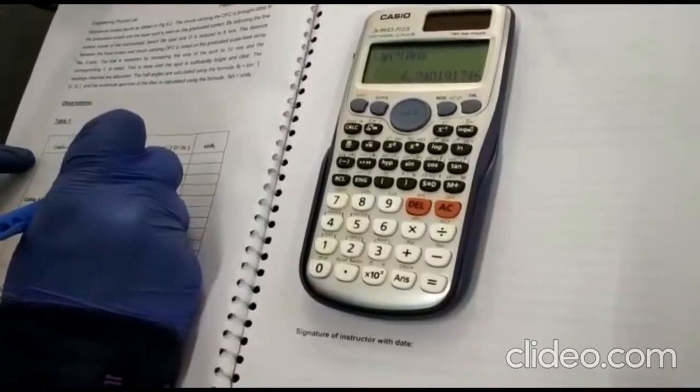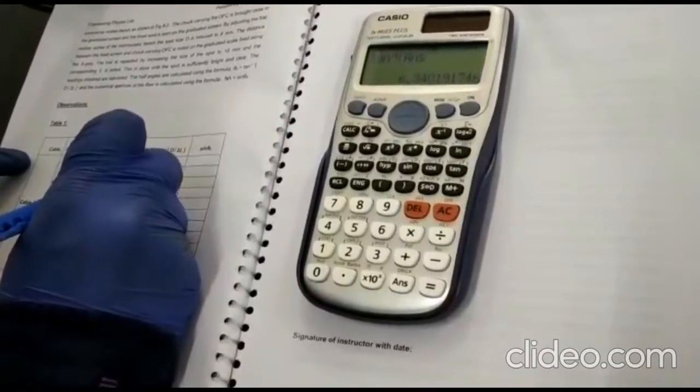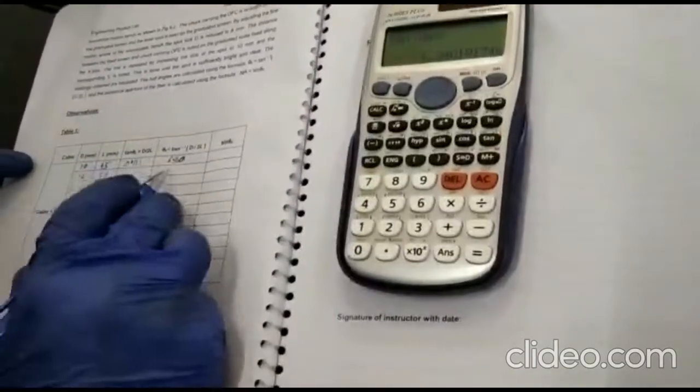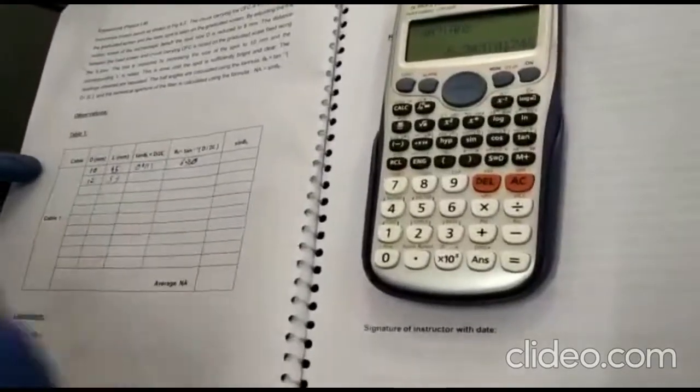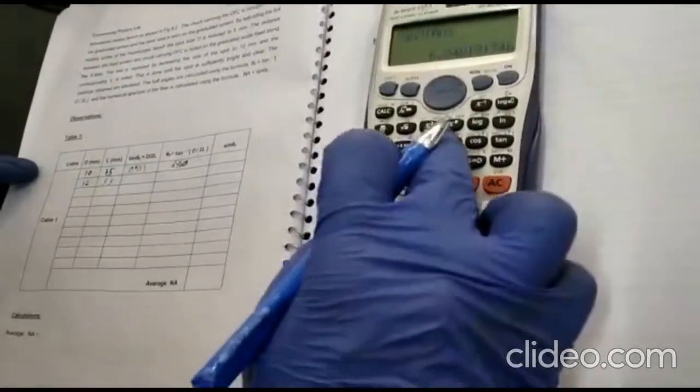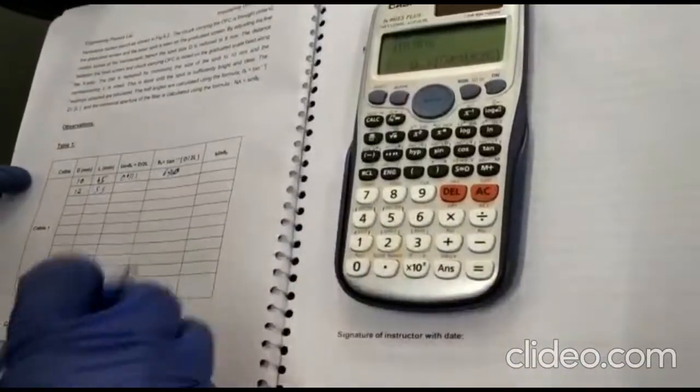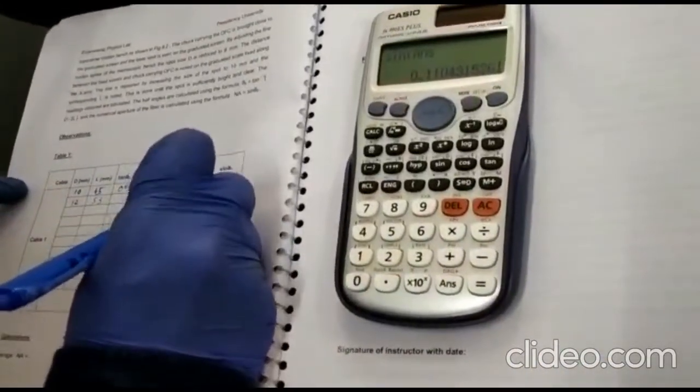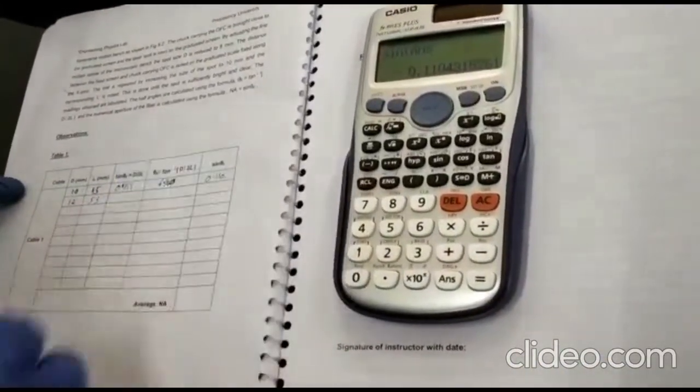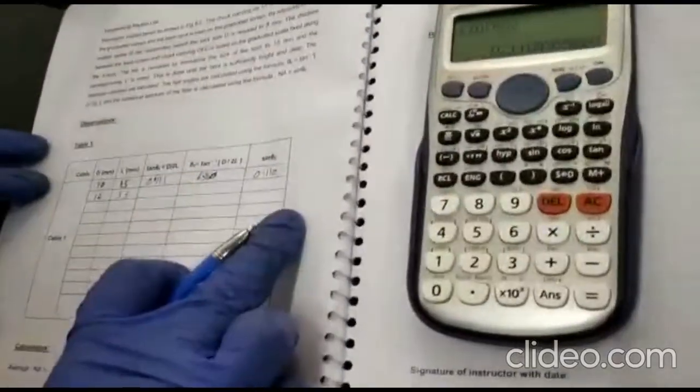6.340. So that is the tan theta. How do you find the sin of this? So next you sign, answer equal to, you will get sin theta 0.110. Okay, so this is how you do for the first row.